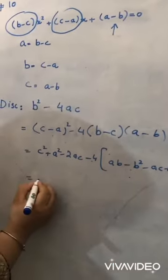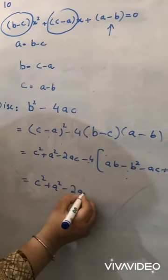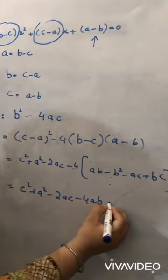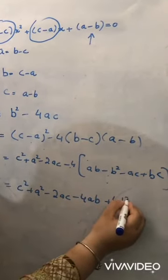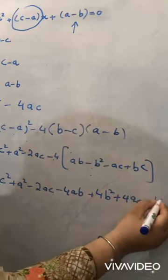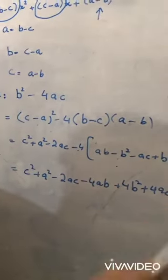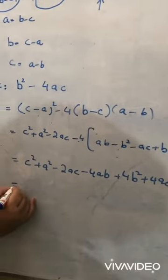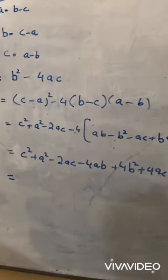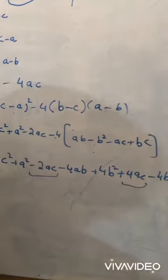We multiply the two brackets to get ab minus b² minus ac plus bc, giving us: c² plus a² minus 2ac minus 4ab plus 4b² plus 4ac minus 4bc. These are seven terms. We now look for like terms.